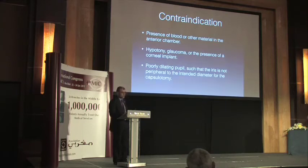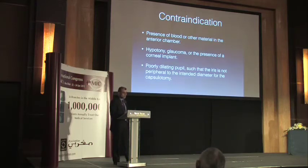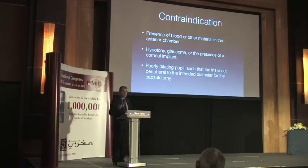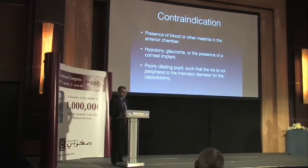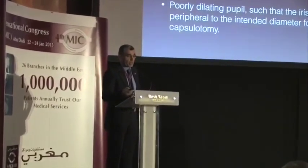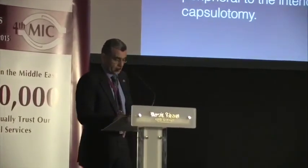If there is any unclear media such as blood in the anterior chamber, flare, or anything that will prevent laser penetration in the eye, this is a contraindication. Hypotony, glaucoma, and the presence of any corneal implant are also contraindications. For capsulorrhexis to be performed with the laser, the patient must be fully dilated — or at least mid-dilated to more than 6 millimeters — before surgery; otherwise capsulorrhexis cannot be made. This is the major advantage of FLACS, and intracameral injection can help dilate intraoperatively if needed.